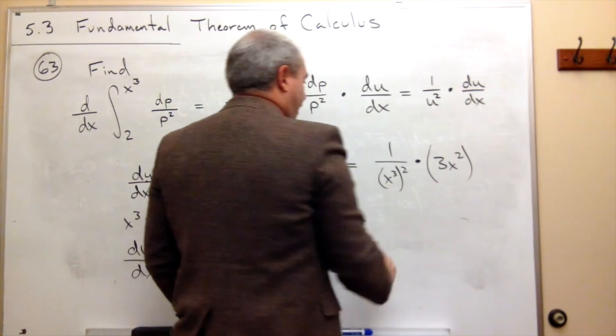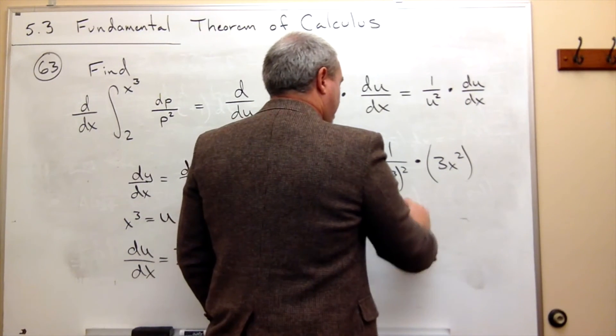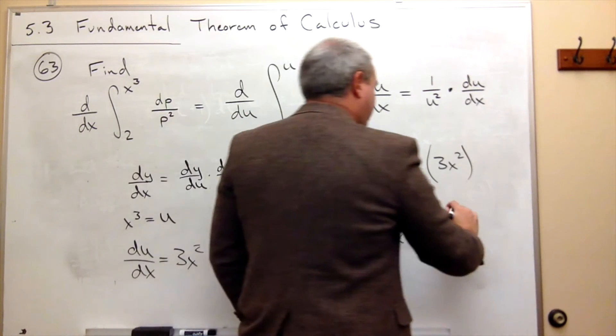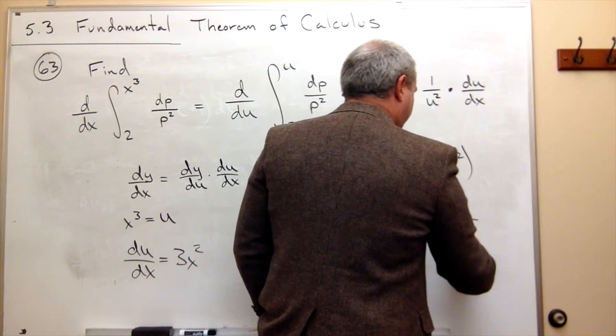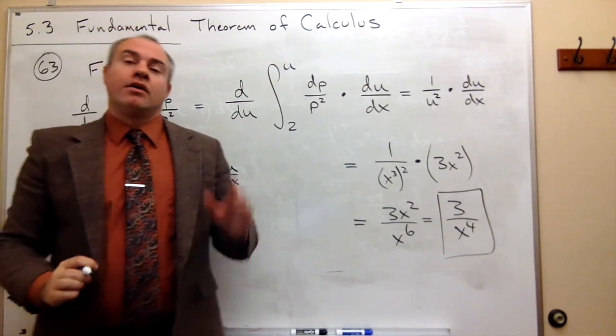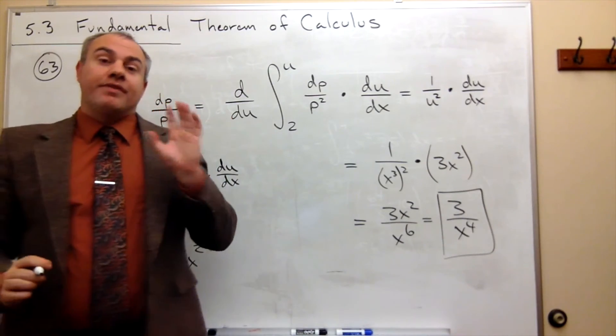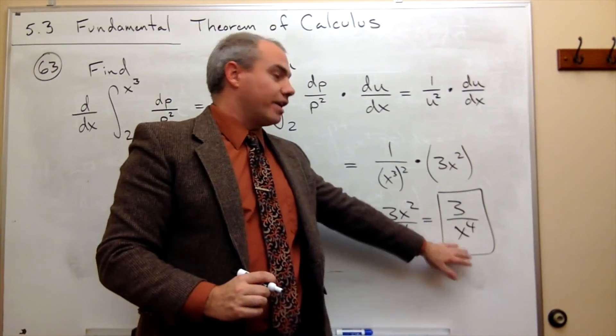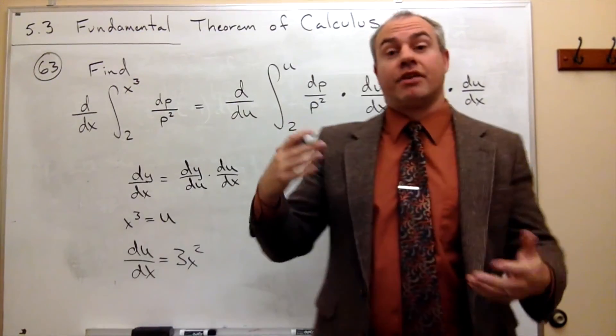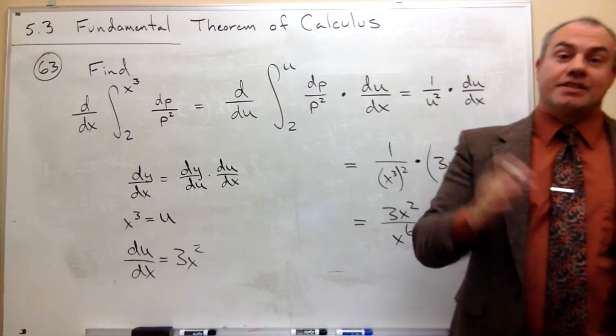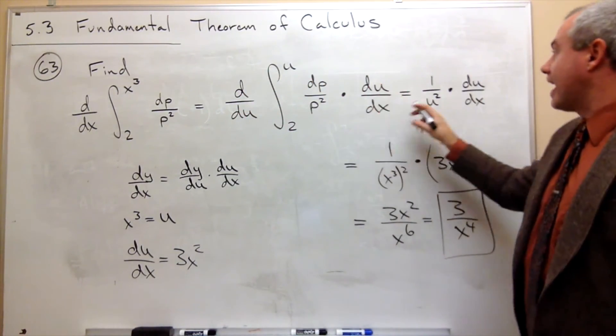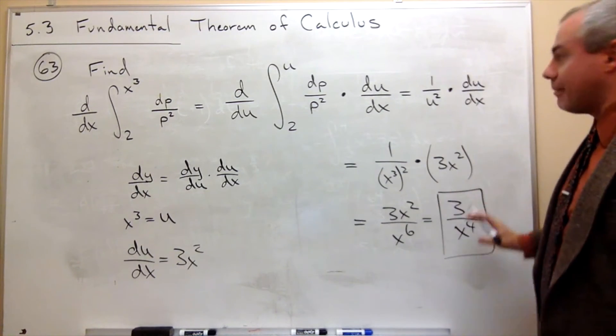So I just want to multiply this thing by 3x squared. In other words, I have 3x squared divided by x to the 6th, and if you want to simplify that down a little more, that would just be 3 over x to the 4th. And that's my answer. That's the answer, and that's what I was trying to get. I went through a big, long process to get there.